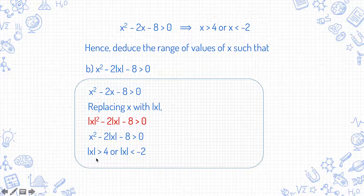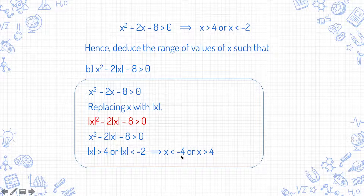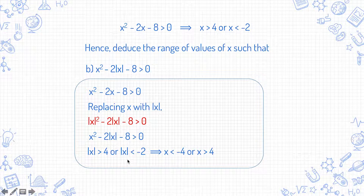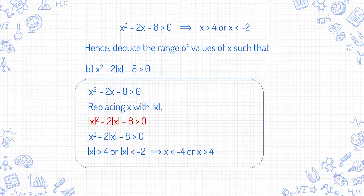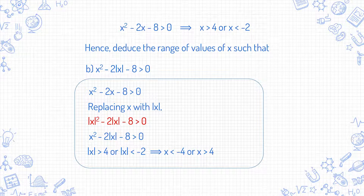If |x| > 4, then x > 4 or x < -4. And for |x| < -2, there is no solution for this part because |x| has to be greater than or equal to 0 for all real values of x. Just take note that I use red for working that is technically not necessary, but which you can write if you find it too confusing to go straight to the next step.